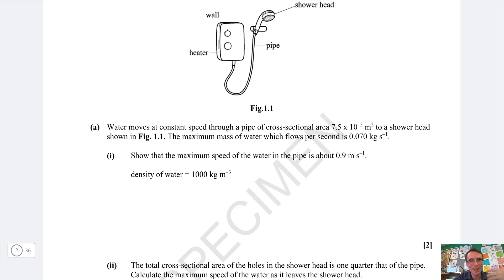Any time we're given density it is just useful to write down that density is given by the mass divided by the volume. Notice that we're given the maximum mass of water which flows per second. This is an exam question hint which tells us to consider everything that happens in one second.